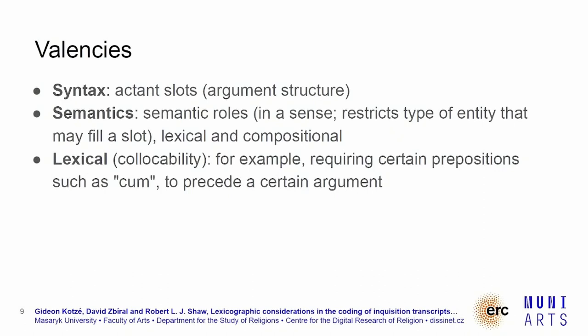We also have valencies — code valencies. There are different types. We have syntactic valencies, where we have actant slots that basically represent the argument structure. Semantic roles as well, where they restrict the type of entity that may fill a slot. For example, the Latin word 'dixit,' which means 'says,' always assumes that a person must be in a subject slot. Then we also have lexical valencies, which require specific prepositions to precede a certain argument, for example.